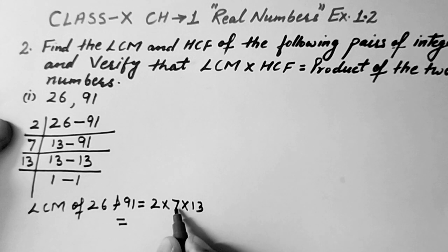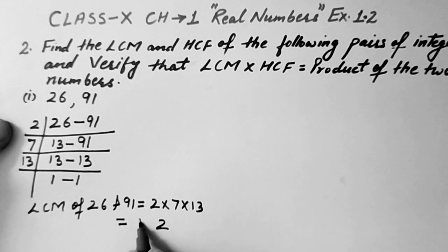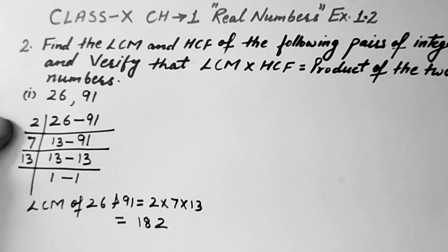So 13 sevens are 91, 91 twos are 182. So this is LCM of these two numbers.